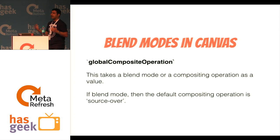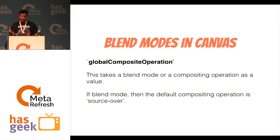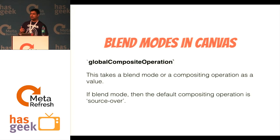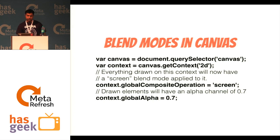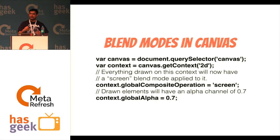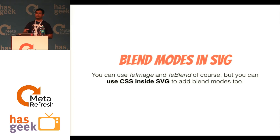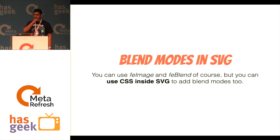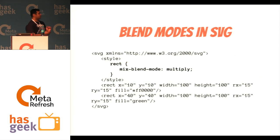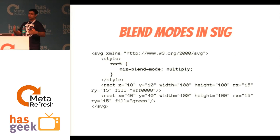You can also use blend modes in Canvas — you're not restricted to HTML or CSS. There's a particular property called globalCompositeOperation, which takes either a composite operation like source-over, or a blend mode. For example, you can say context.globalCompositeOperation = 'screen' and the screen blend mode will be applied. Blend modes can also be used in SVG, which is kind of coming full circle, because blend modes actually started in SVG. Even without CSS in SVG, you can use blend modes with feImage and feBlend. But you can also use CSS in SVG — select the rect element, say mix-blend-mode: multiply, and the blend mode is applied.